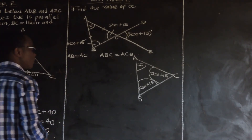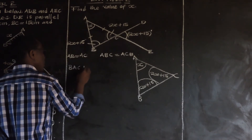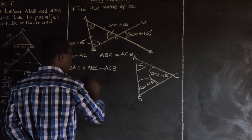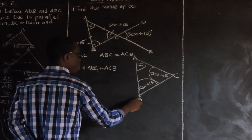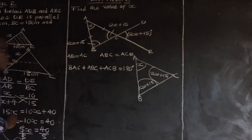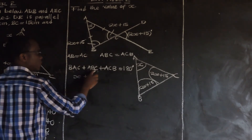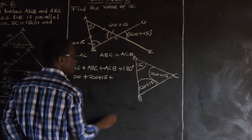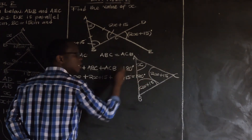So we can now find the value of X. Angle BAC plus angle ABC plus angle ACB equals 180 degrees. That is X plus 2X plus 15 plus 2X plus 15 equals 180 degrees.